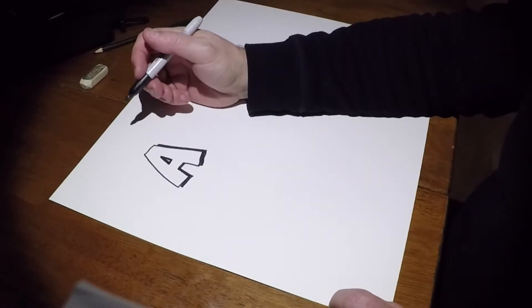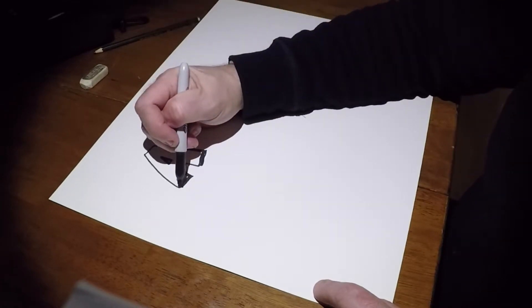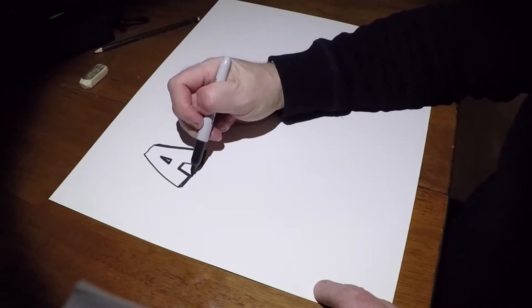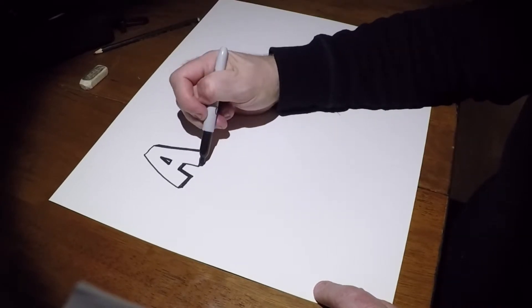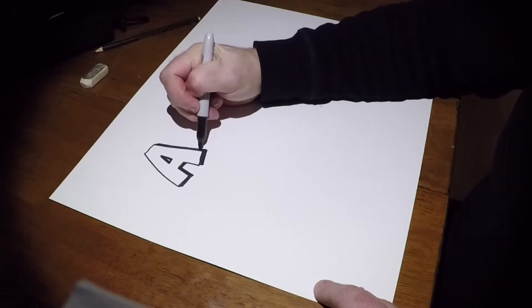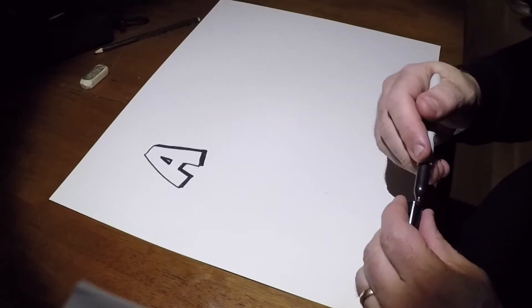Let's take it from a drop shadow to a 3D letter. Watch this simple trick: fill in those corners and all of a sudden you've got a 3D block letter. Now your 3D block letter can be as deep as you want it to be.